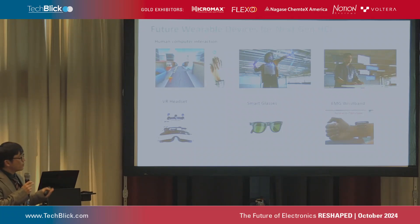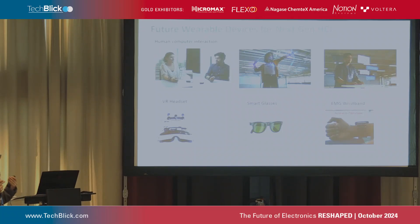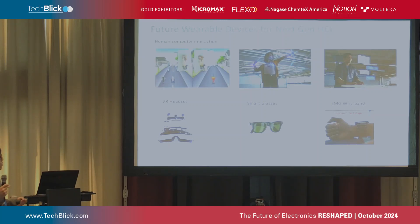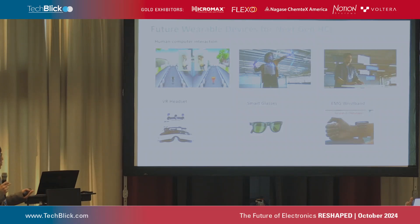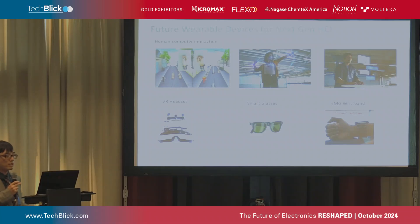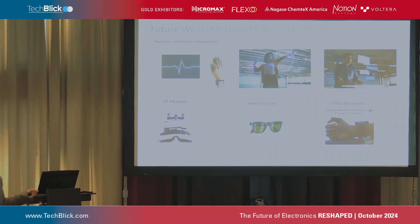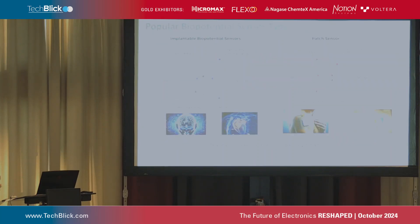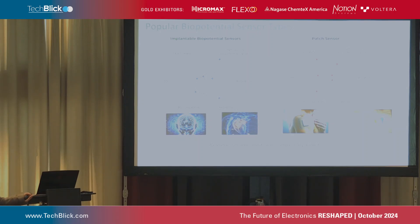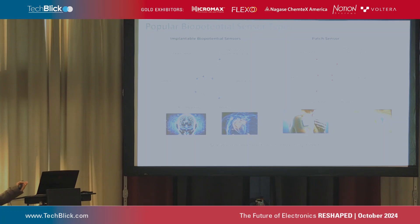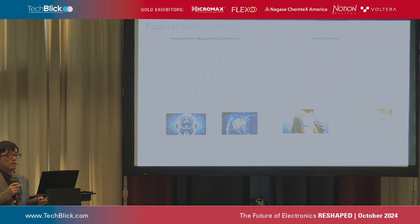To enable this vision, it is very important to have high-performance biopotential sensors that can extract high-quality motor neuron signals from the body. The question now is which type of biopotential sensors can be used for this application. Let's look at what the popular biopotential sensors on the market are — there are two types listed here, the first being implantable biopotential sensors, which are embedded inside the body.